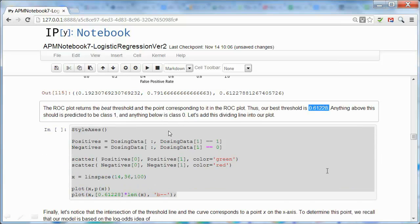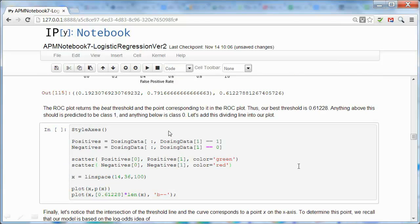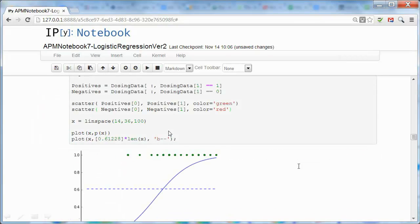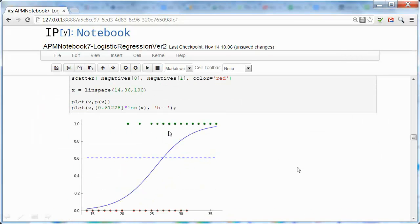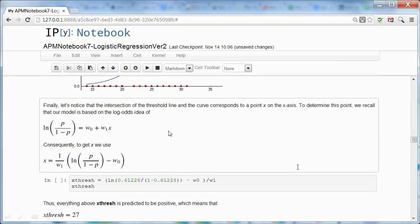So we can redo our plot. And notice that we'll get a horizontal line that separates our data. And above that is classified as positive, and below that is classified as negative.